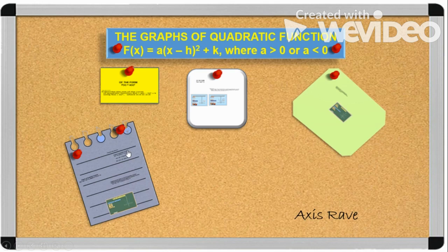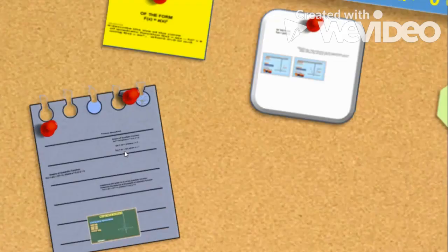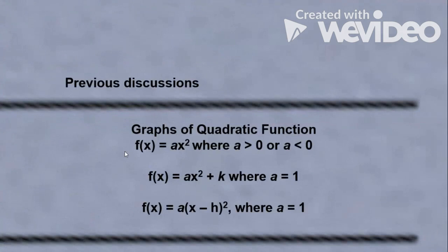Before we discuss our new lesson, let us first recall our previous discussions in Part 1, Part 2, and Part 3. In the first part, we discussed the graphs of quadratic functions in the form ax², where a is greater than 0 or a is less than 0. The value of a determines the opening of the parabola.